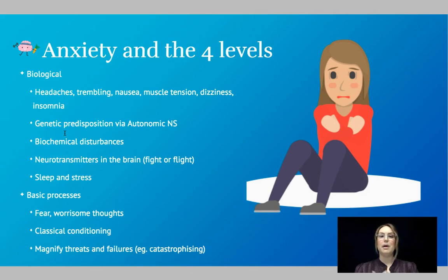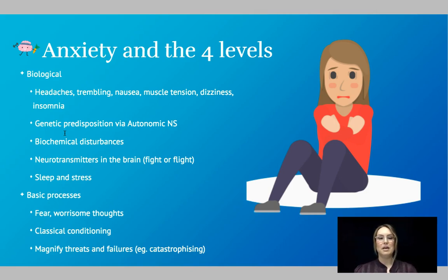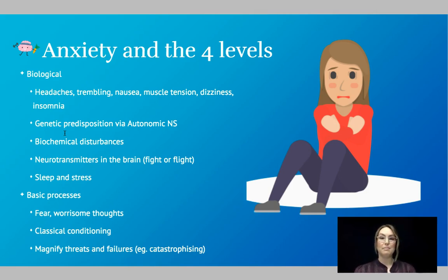For anxiety, some of the biological symptoms include headaches, trembling, muscle tension, feeling dizzy, and not being able to sleep. There is a slight genetic predisposition and the autonomic nervous system plays a role — the sympathetic and parasympathetic nervous system in fight or flight. There are biochemical disturbances, usually what medication tries to address, including neurotransmitters and increased hormones like adrenaline and noradrenaline. Sleep and stress are also impacted, and a lack of sleep and increased stress can be risk factors for anxiety.